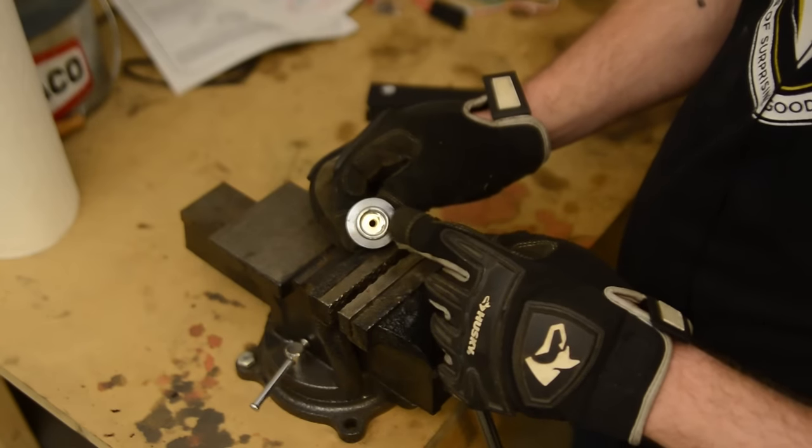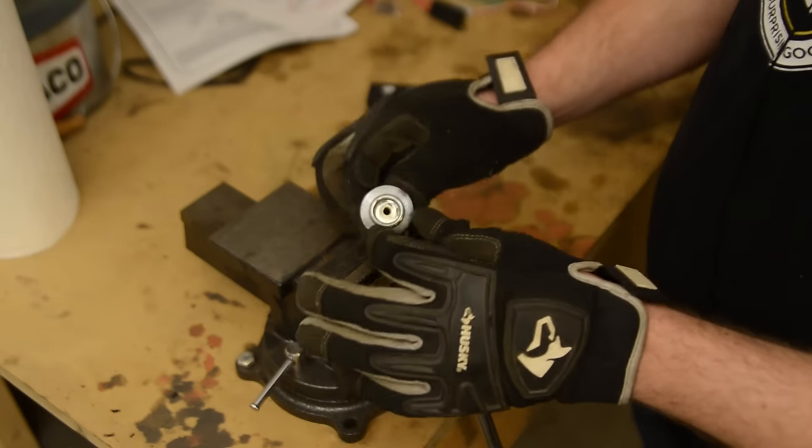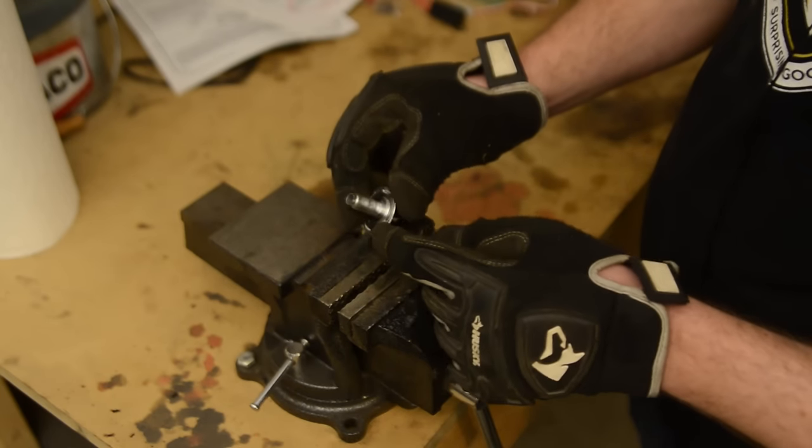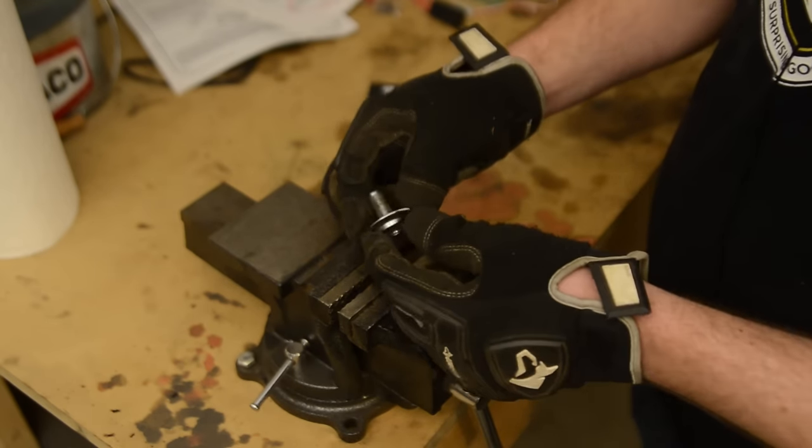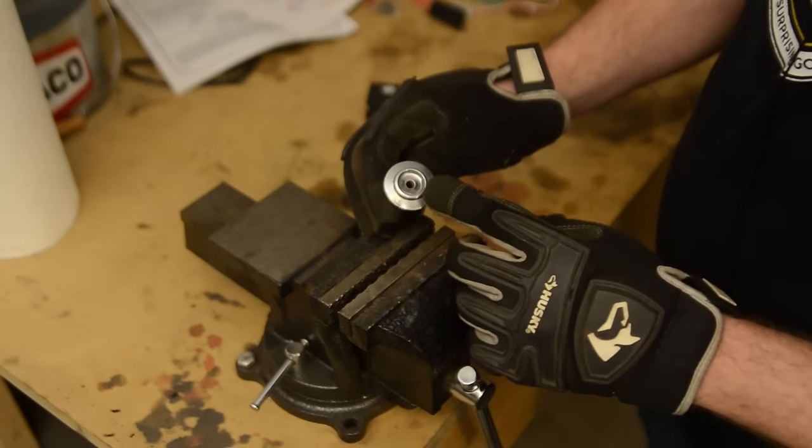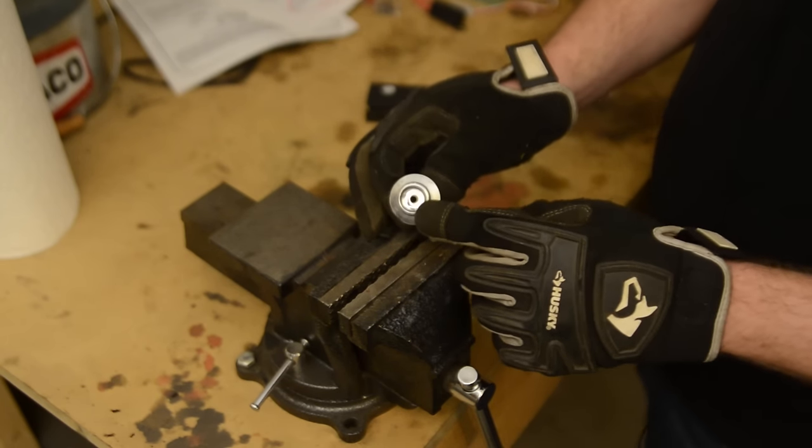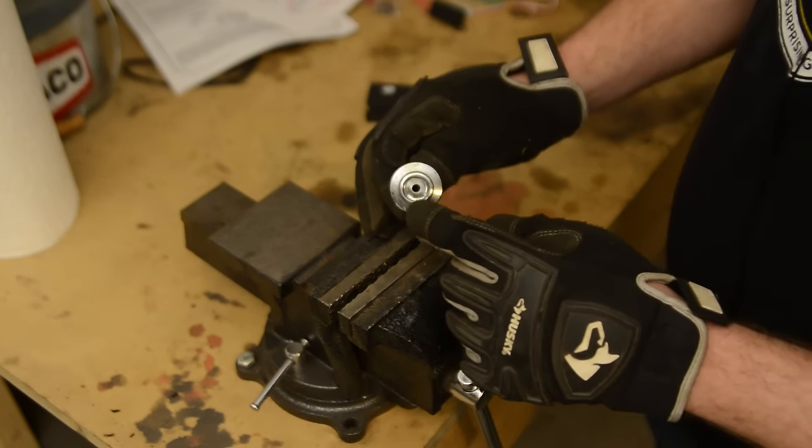So what I'm going to try to do, this is the old heater control bezel that goes in the dash. I'm going to try to cut this part, cut this off here and open up this hole a little bit and see if that will be a good size for the new knob.